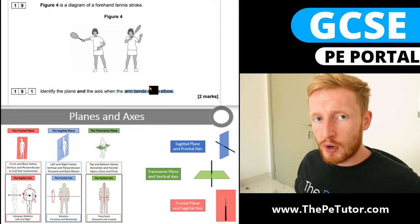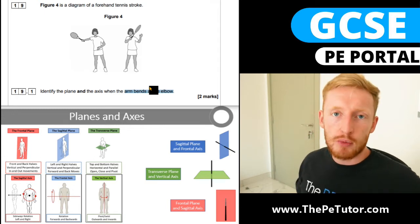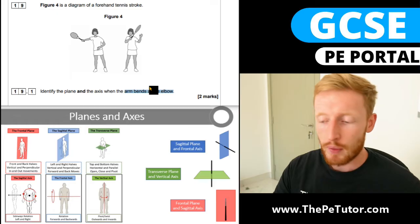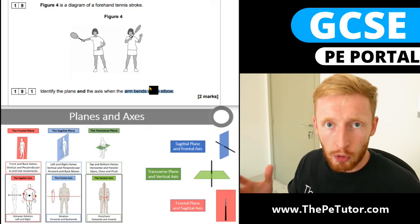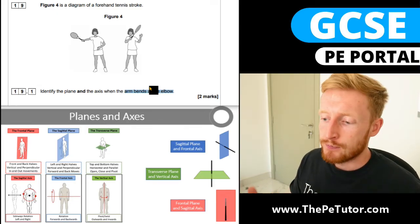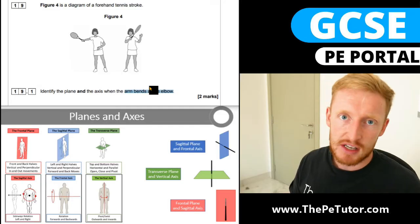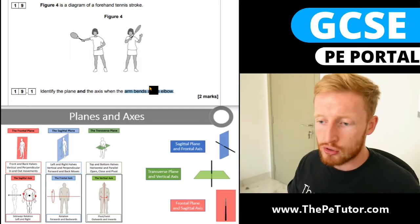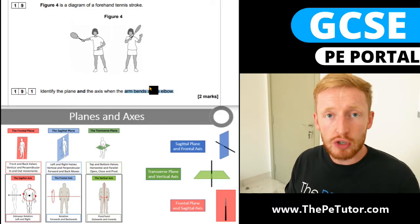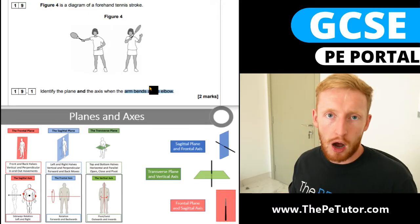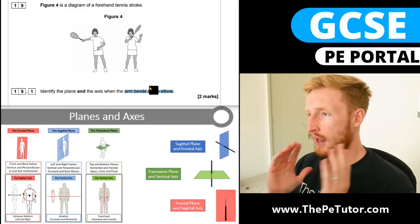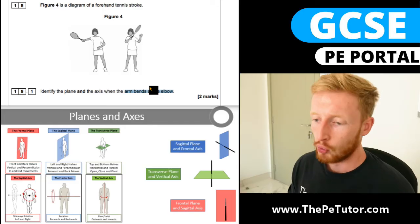Before we answer any question like this, we first need to identify what sort of joint action is occurring, and then we always take it back to anatomical position to assess how the planes and axes are involved in that movement. Anatomical position is obviously with our feet and palms facing forward, hands down by our side, head looking forwards.